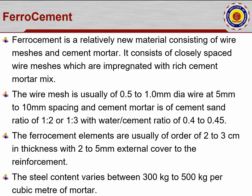Ferrocement is a relatively new material consisting of wire mesh and cement mortar — notably cement mortar, not concrete. It consists of closely spaced wire meshes impregnated with a rich cement mortar mix. The wire mesh is usually 0.5 mm to 1 mm diameter wire at 5 mm to 10 mm spacing. The cement mortar is of cement-sand ratio 1:2 or 1:3 with a water-cement ratio of 0.4 to 0.45.